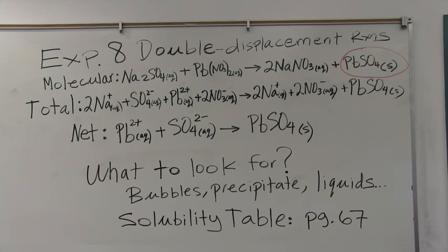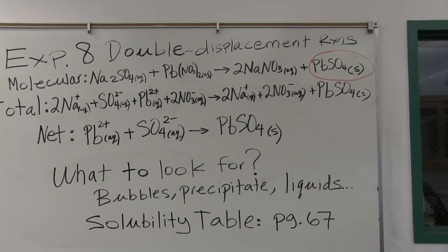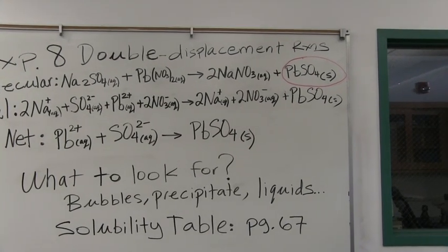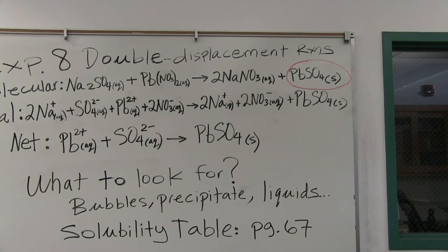These type of reactions usually produce either a solid, liquid or gas. If you focus on the molecular equation on the right hand side, you're going to see that this reaction produces a solid lead 2 sulfate, which I circle in red.